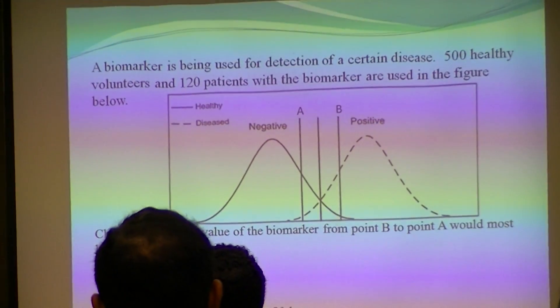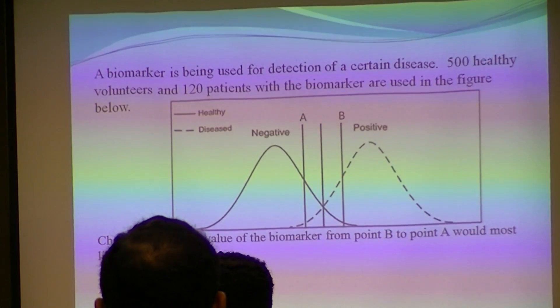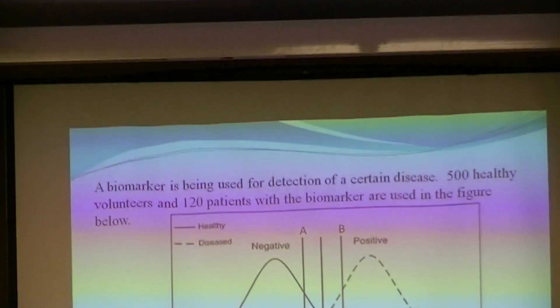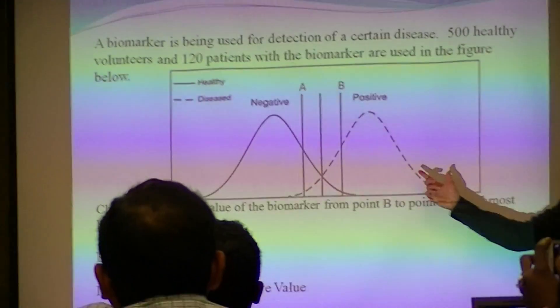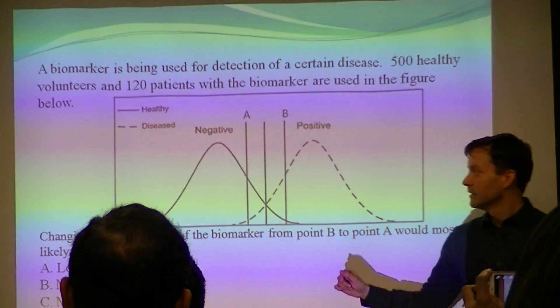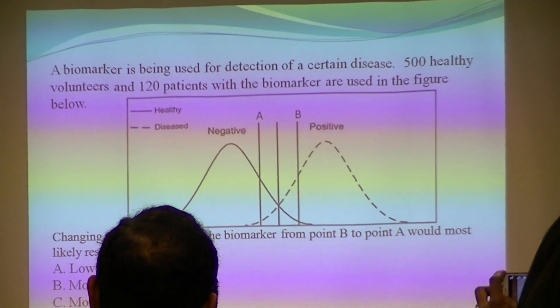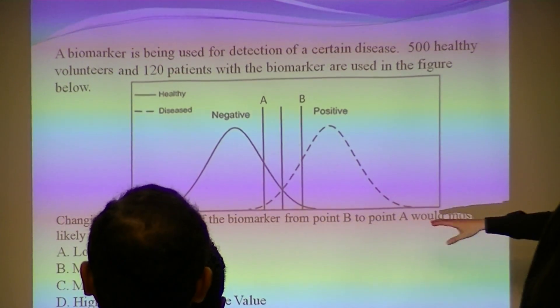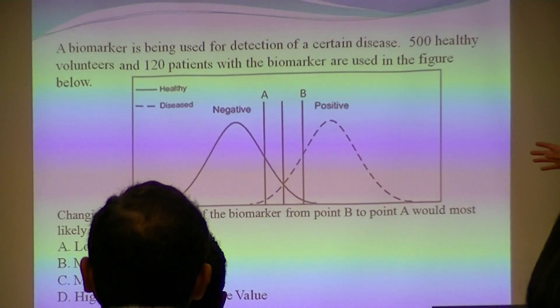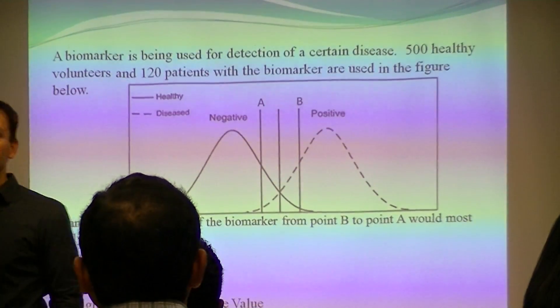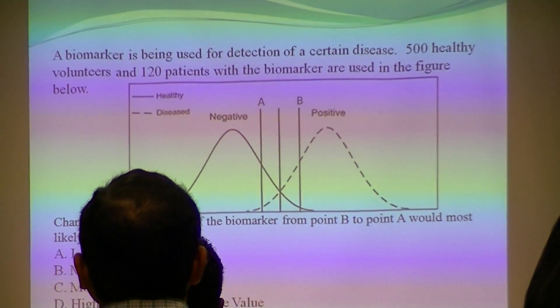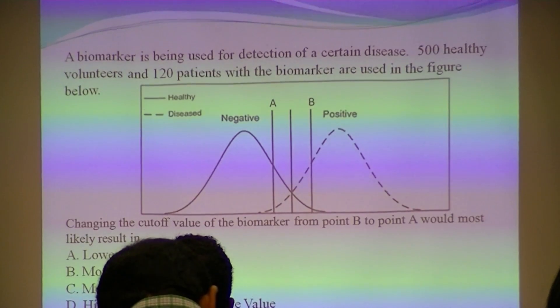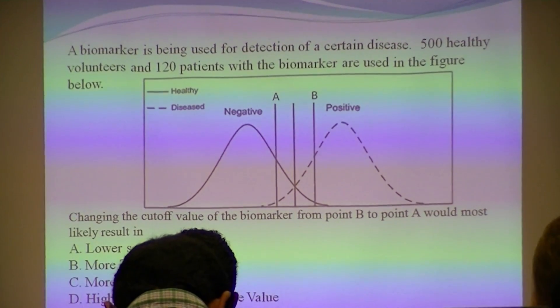A biomarker is being used for patients with a certain disease. 500 volunteers and 120 patients with a biomarker are used. They give you this. Yes I stole it from somewhere and I adjusted it. Changing the cutoff value of the biomarker, and I'm giving this to you. It's another one. I'm telling you right now, I'm giving it to you next month. Period. I'm changing the answers.